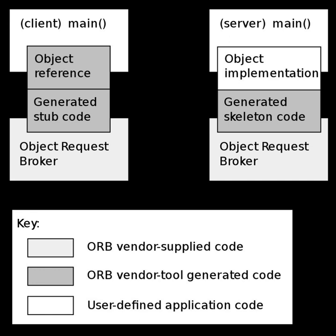The CORBA specification dictates there shall be an ORB through which an application would interact with other objects. In practice, the application simply initializes the ORB and accesses an internal object adapter, which maintains things like reference counting, object and reference instantiation policies, and object lifetime policies. The object adapter is used to register instances of the generated code classes, which are the result of compiling the user IDL code.